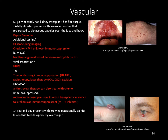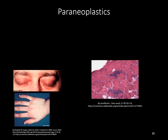Pyogenic granuloma: a 14-year-old boy with a growing, occasionally tender lesion that bleeds vigorously over his finger. Pyogenic granulomas can also be seen during pregnancy.